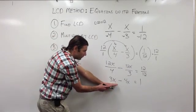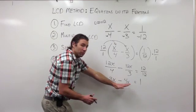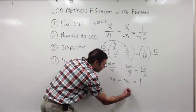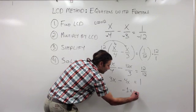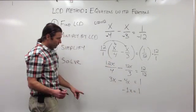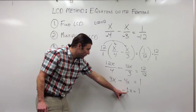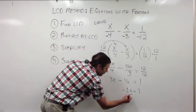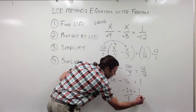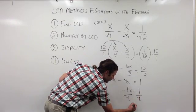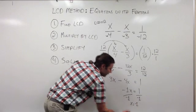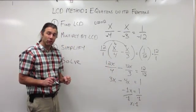Now I'm left with a normal equation that I know how to solve. So I would start simplifying the left side. 3x minus 4x is going to give me negative 1x, and that equals 1. Now to get x all alone, I'm going to divide both sides by negative 1, and I'll get x equals negative 1 as my answer.